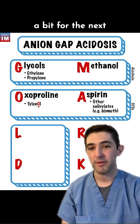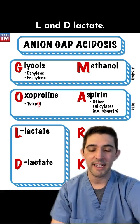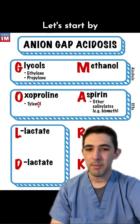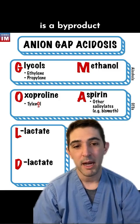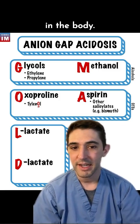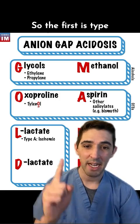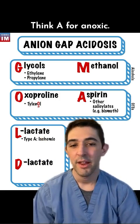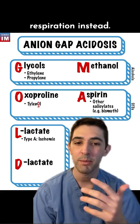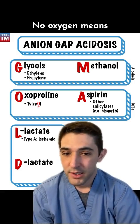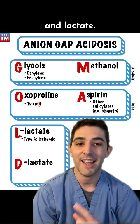Now we're going to flip things a bit for the next box: L and D. L and D stand for L-lactate and D-lactate — the two isomers of lactate. L-lactate is a byproduct of anaerobic respiration in the body, and there are two different ways it can build up. The first is type A lactic acidosis — think A for anoxic. When oxygen isn't getting to cells, they undergo anaerobic respiration instead: no oxygen means mitochondria aren't working, which means anaerobic respiration and lactate production.